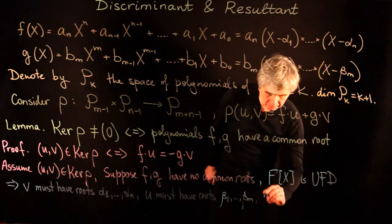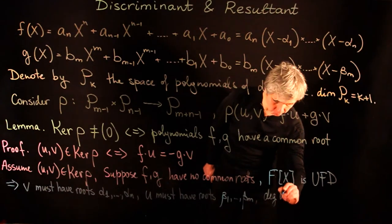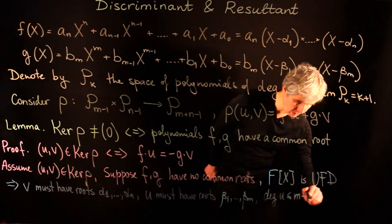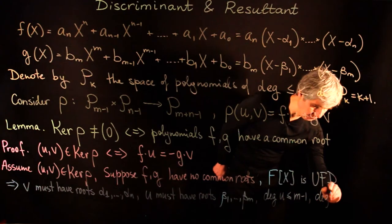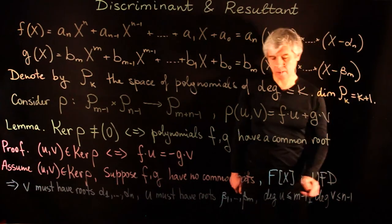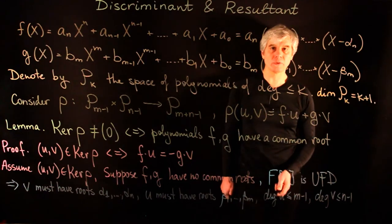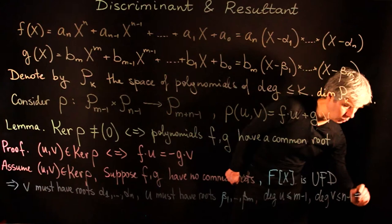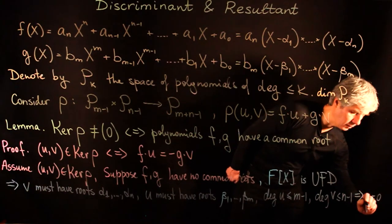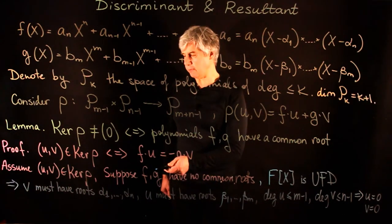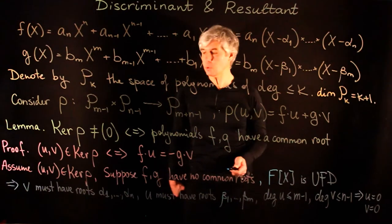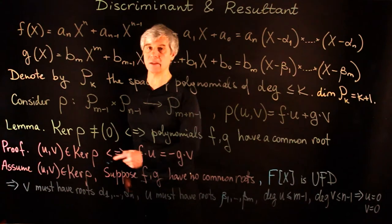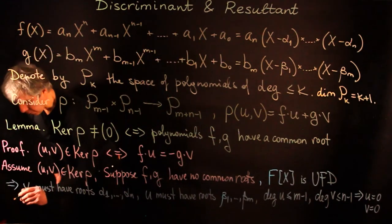But the degree of u is at most m−1 and the degree of v is at most n−1, so we get polynomials of low degrees with too many roots. Therefore u = 0 and v = 0. So if f and g have no common roots, the kernel of ρ is trivial.